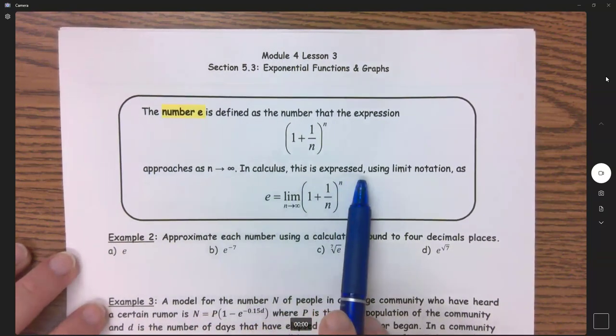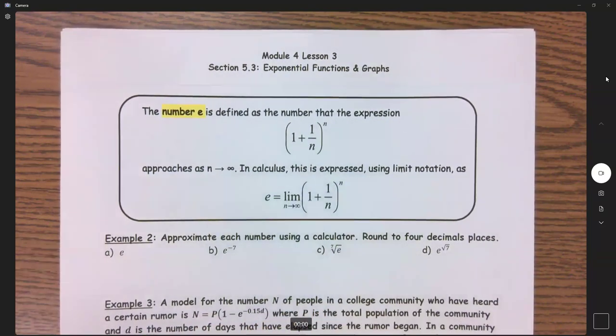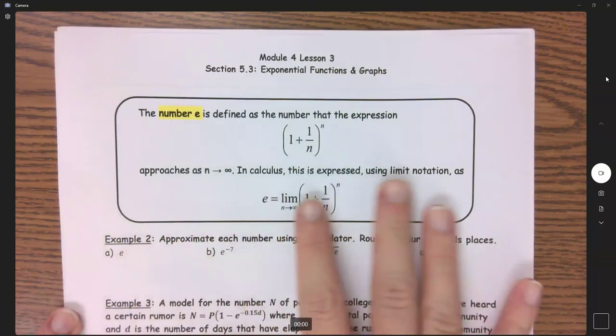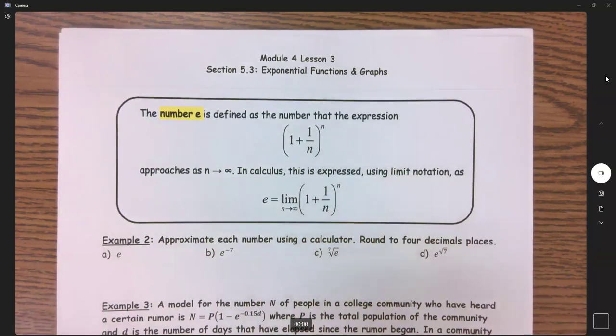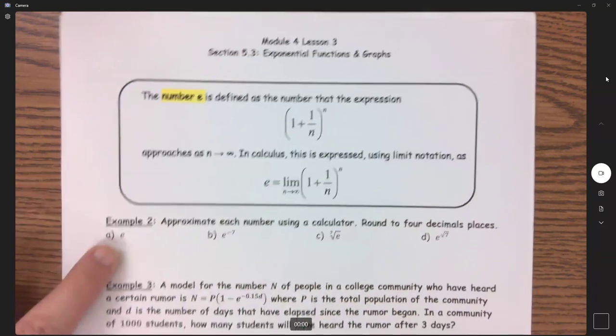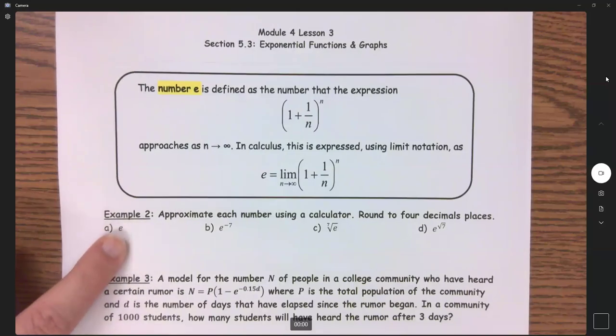And so in calculus, this is expressed using limit notation. So e equals the limit as n approaches infinity of 1 plus 1 over n all to the nth power. You don't need to know this. I just simply put this here because you're going to have a question about it in MyMathLab. What I want you to know is what does e equal?